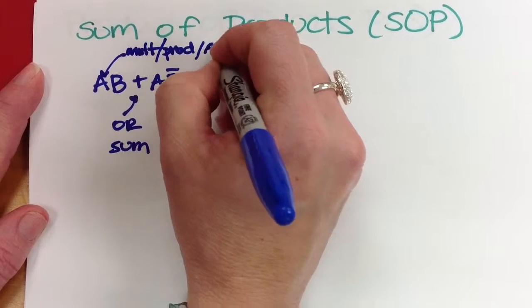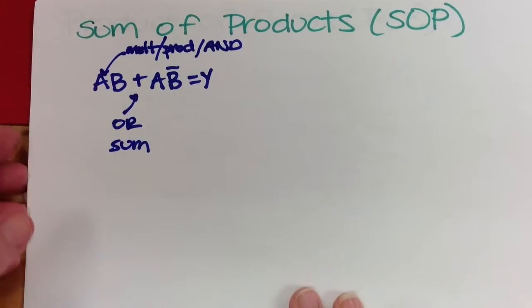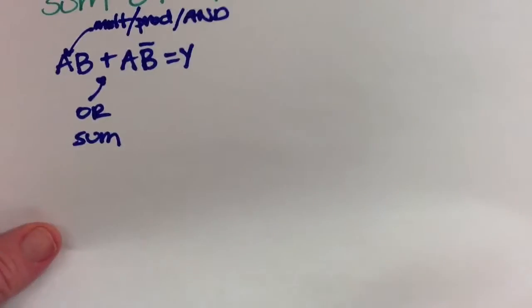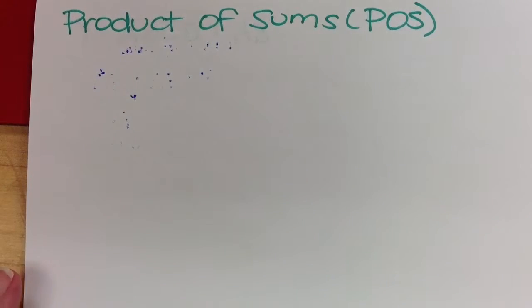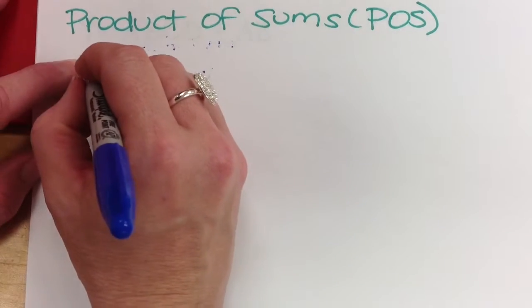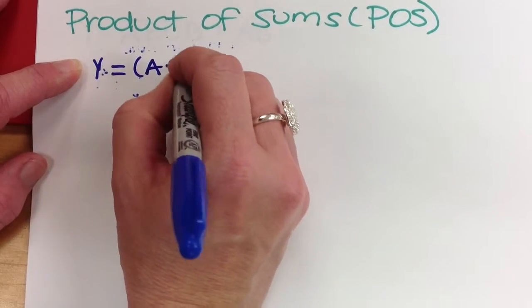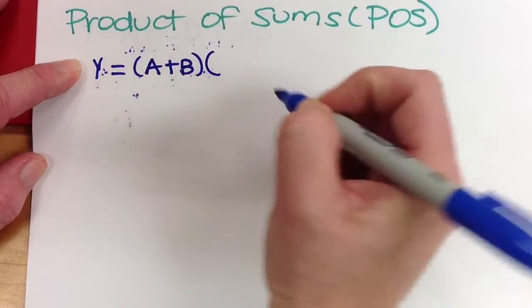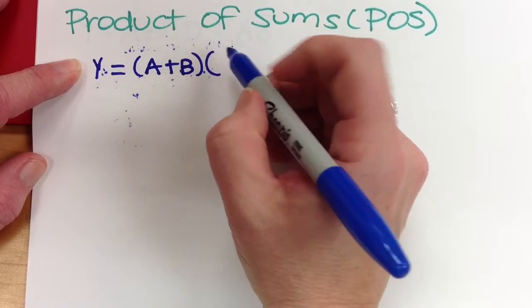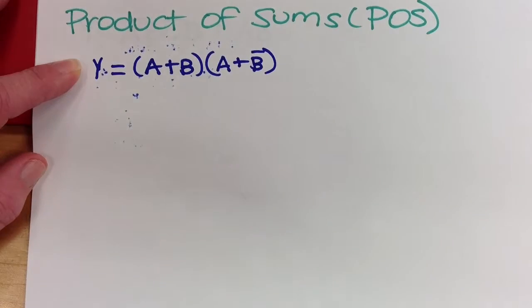And so this is really what we call sum of products. There's another form called product of sums. So product of sums is just kind of the opposite of that. So it would be something like Y equals A or B and A or not B, for instance.